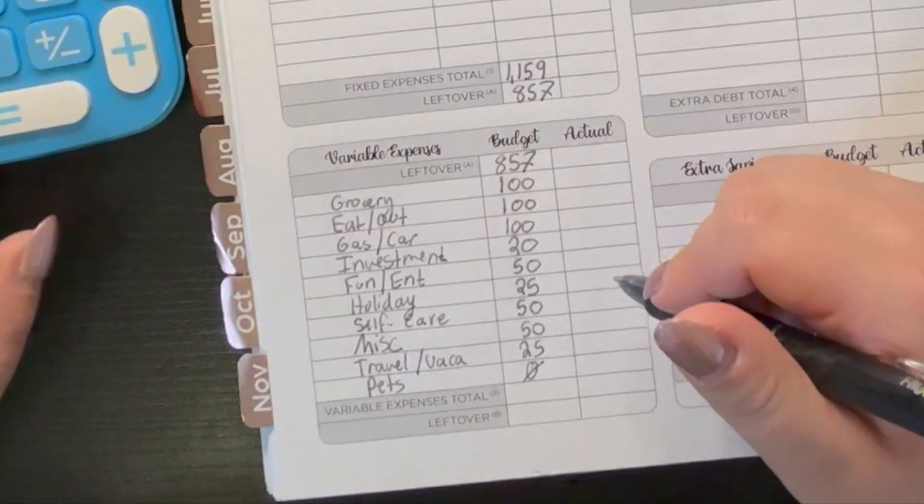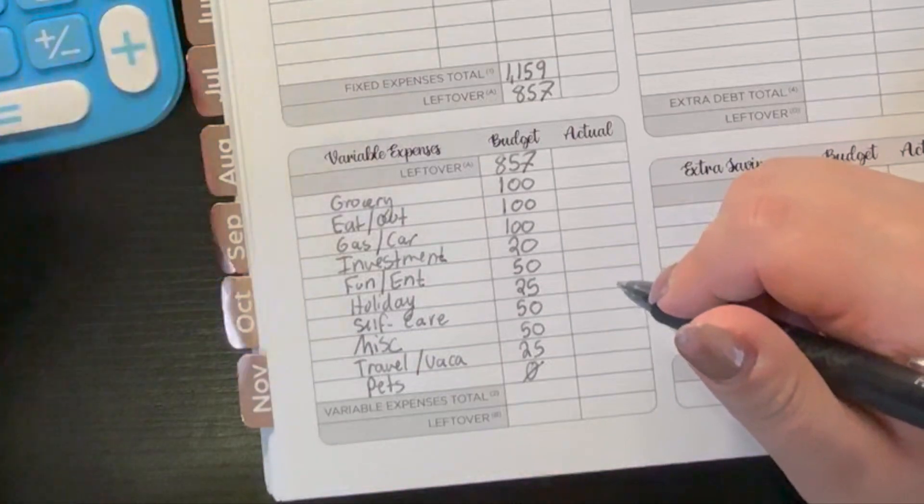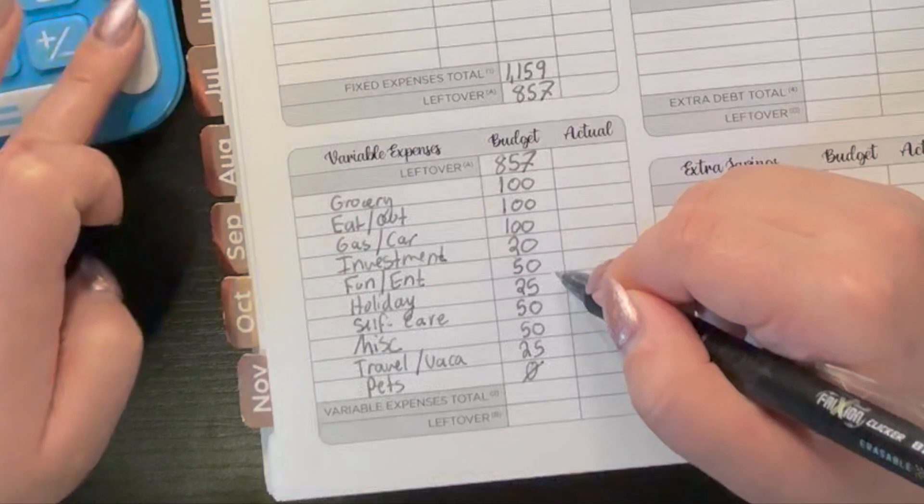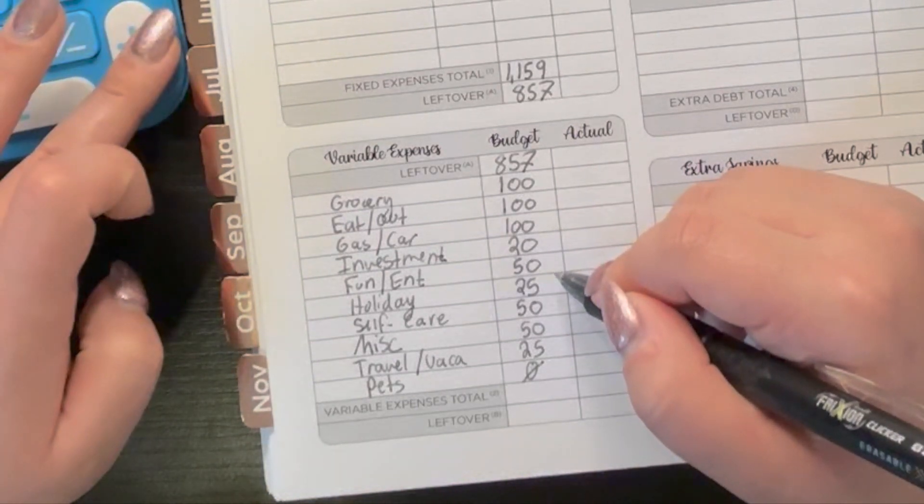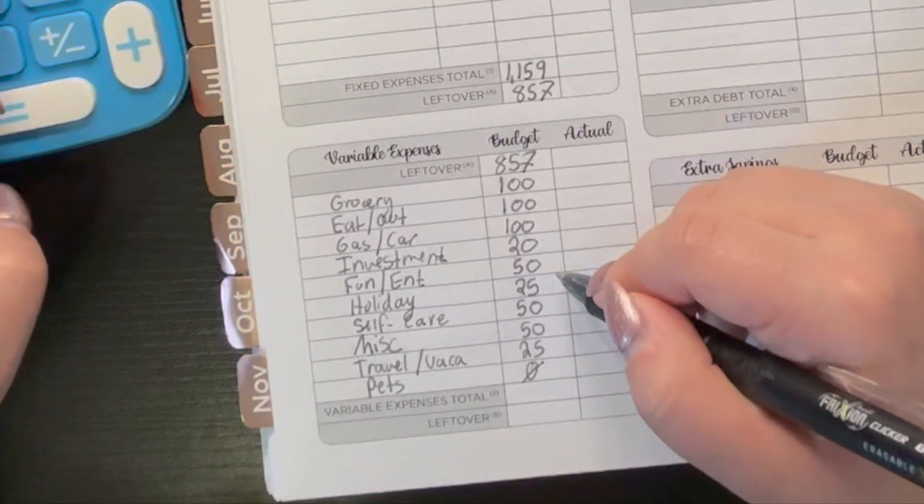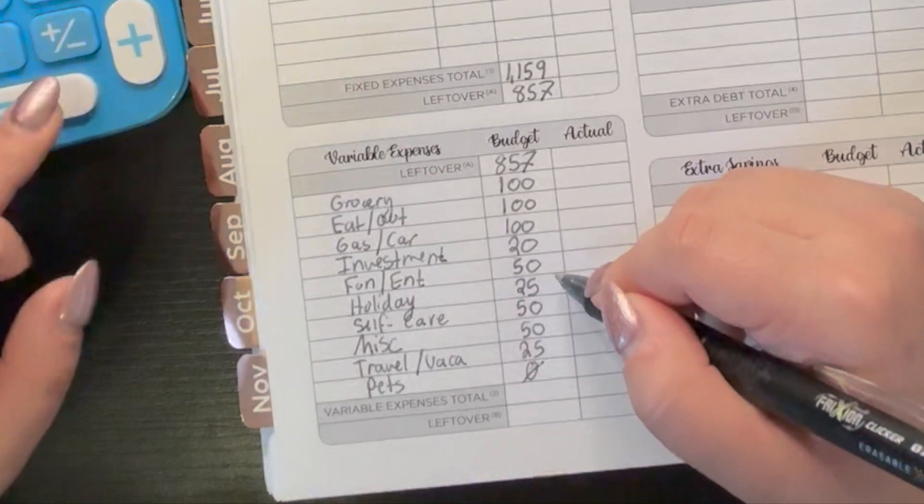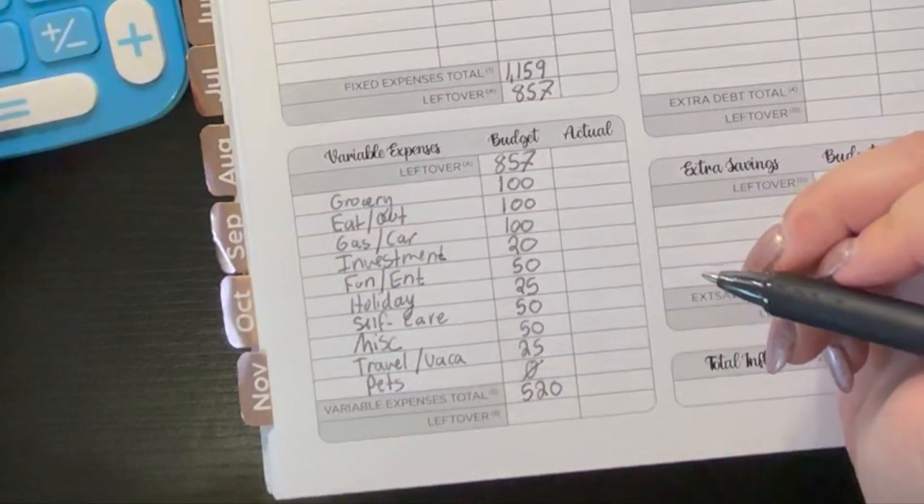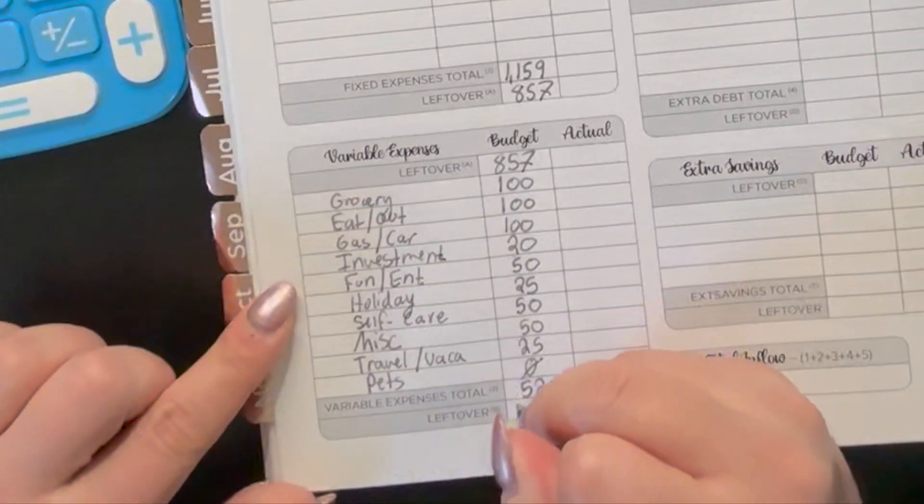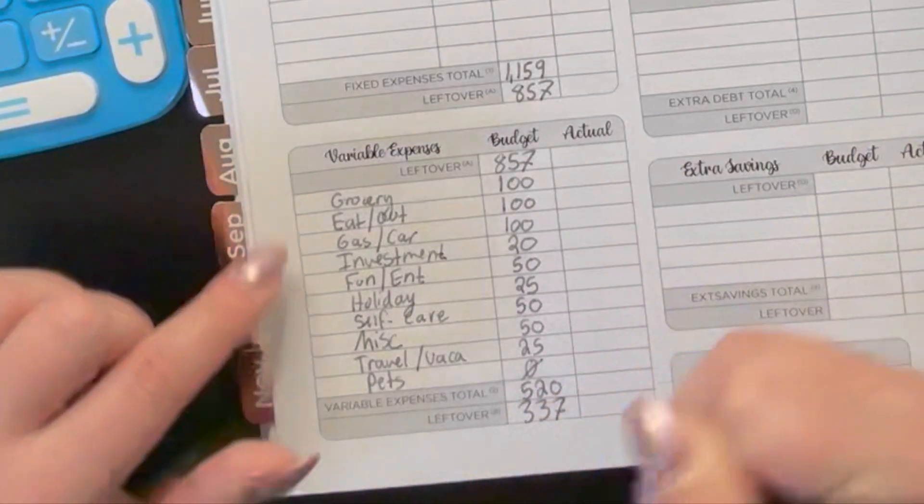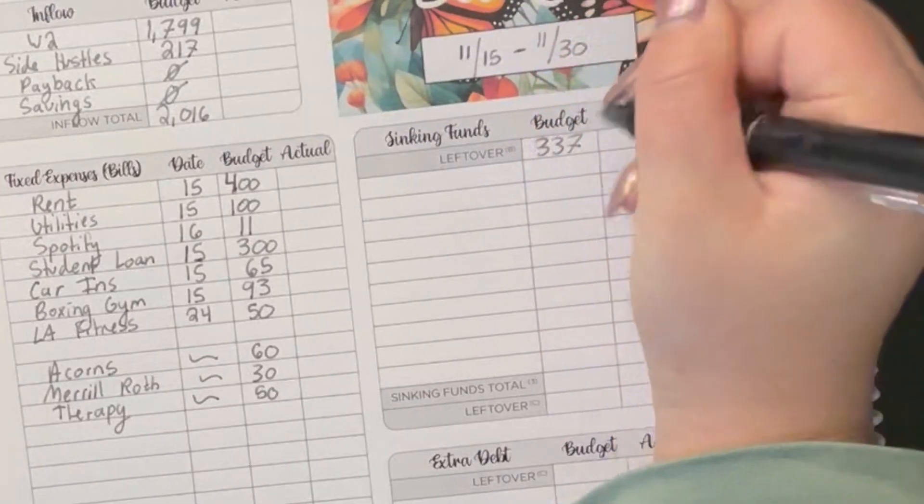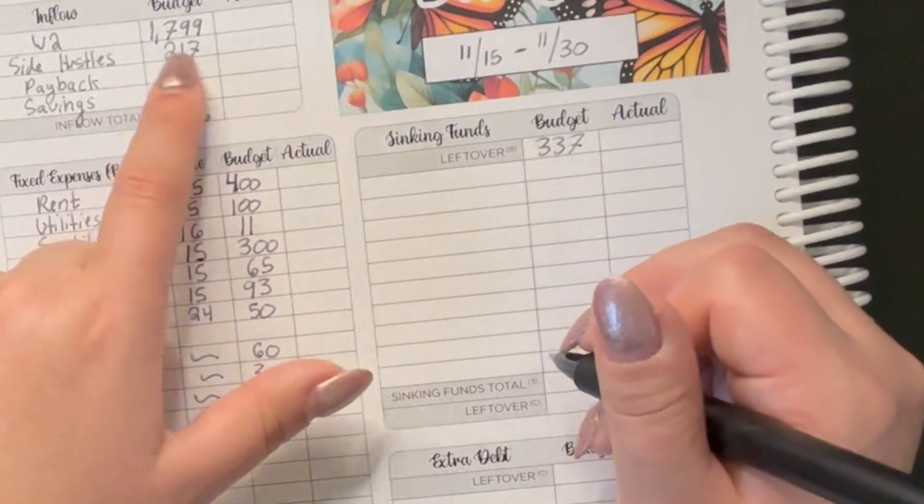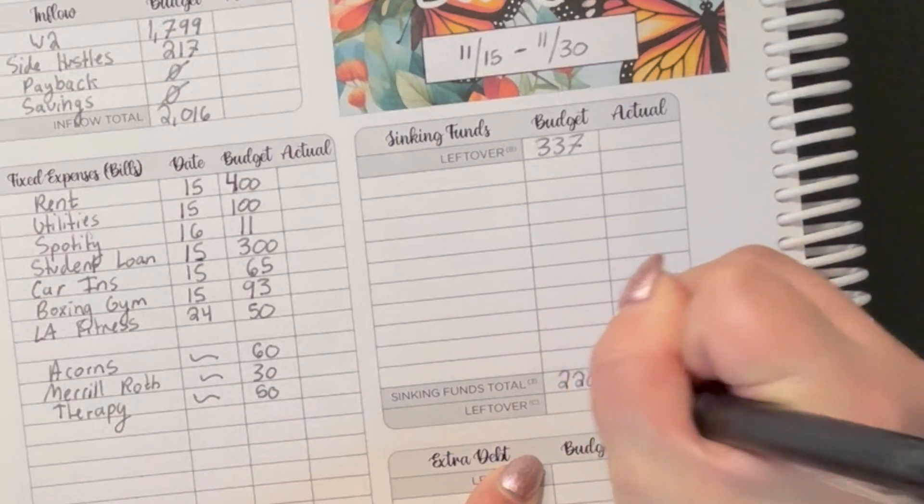So adding that all up, we have $100 plus $100 plus $100 plus $20 plus $50 plus $25 plus $50 plus $54 plus $25 gives us $524. We've got $857 minus $524 gives us $333 leftover. Remember, all side hustle income goes towards sinking funds. So because it's kind of an odd number, we're just going to do $220 in total.